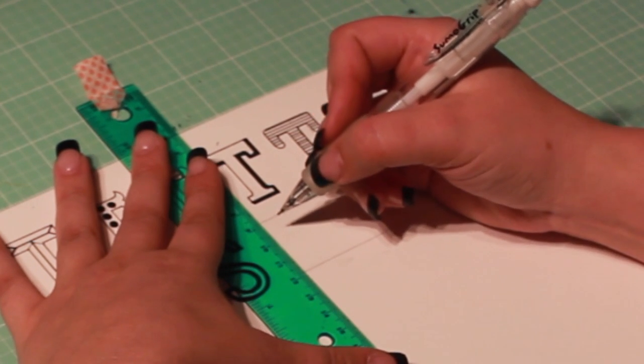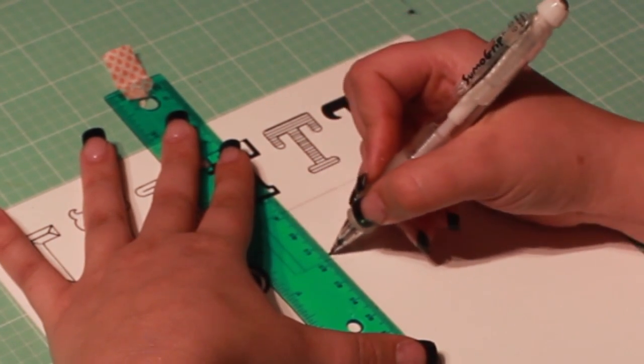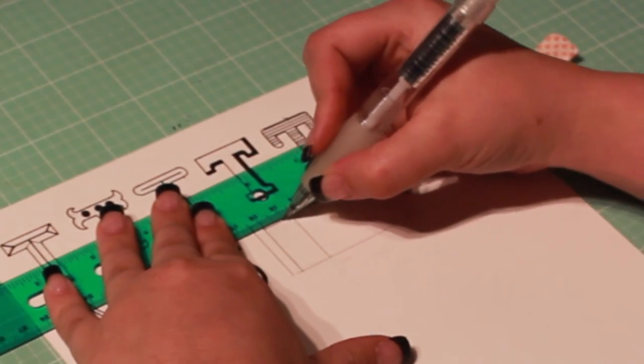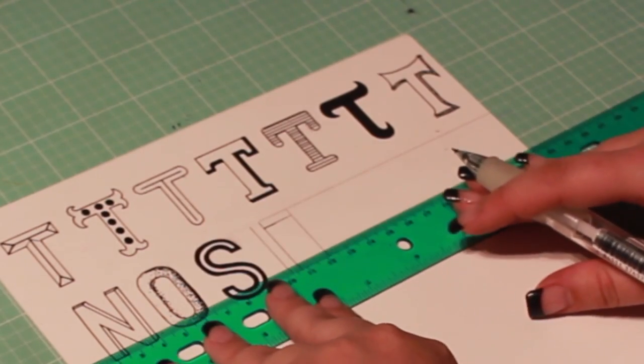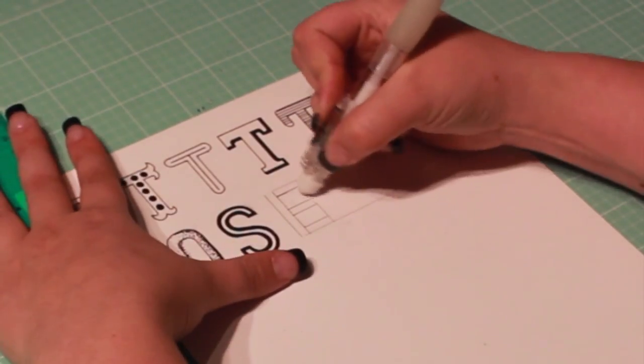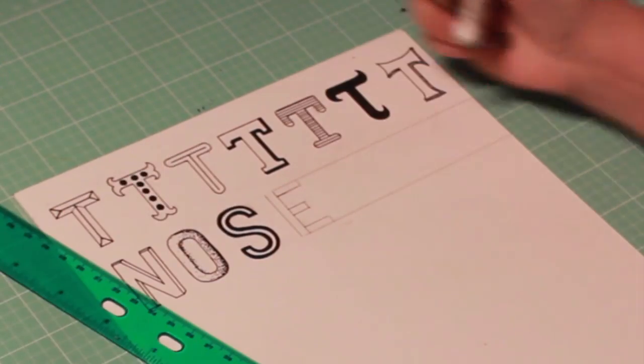Finally, let's try an E. I like to draw a rectangle for this. Then draw the top and bottom arms to extend the width of the rectangle. Then center the middle arm in the space between. Shorten the middle arm by about one-third.